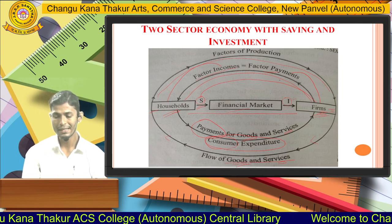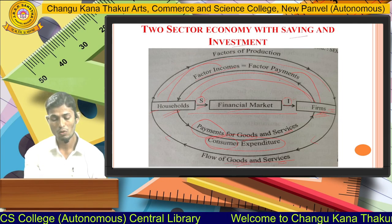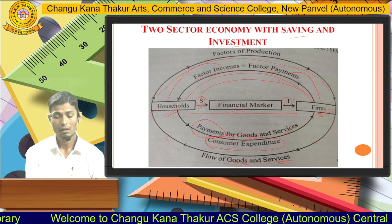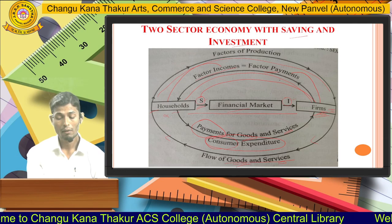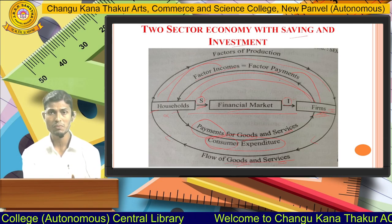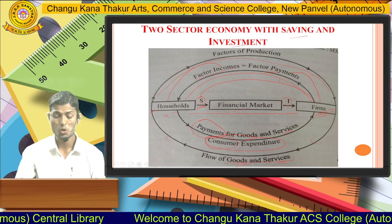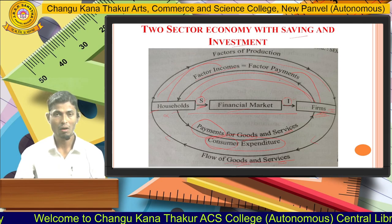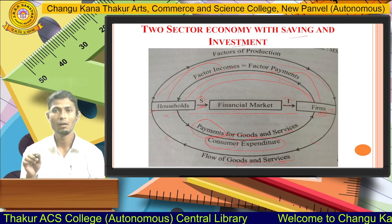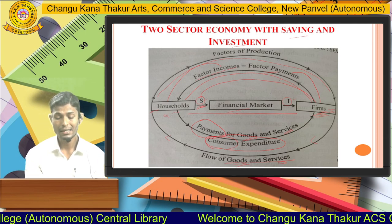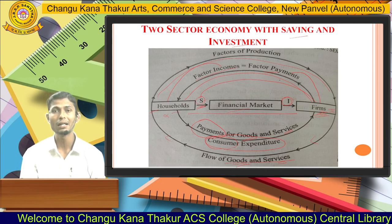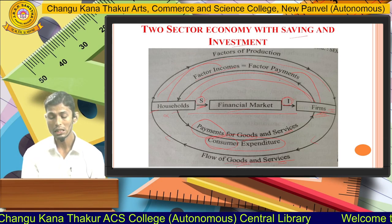Here we are considering savings and investment. In the previous discussion, households were not saving any part of their income; here they are saving. In the previous discussion, savings and investment were both equal to zero. Now, savings are considered leakages — if savings are not used for investment they are a leakage from the circular flow of money. A certain amount of money is taken out of the process as savings. But if entire savings are invested, then investment becomes an injection.